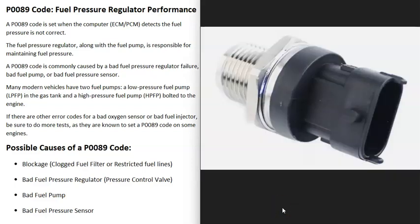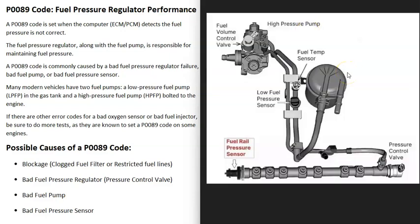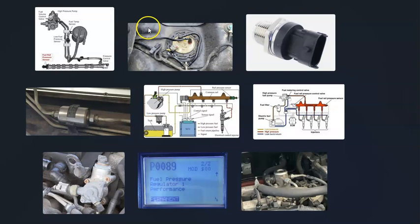The last possible cause is a bad fuel pressure sensor. The sensor may have gone bad and is reporting incorrect information to the computer, making the computer think there's a problem when there isn't one. Depending on the system, there can be differences — a low fuel pressure sensor, a high fuel pressure sensor, or a fuel rail pressure sensor. There can be one sensor or multiple ones.